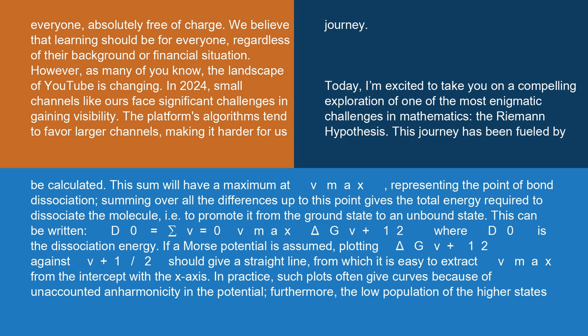This sum will have a maximum at v_max, representing the point of bond dissociation. Summing over all the differences up to this point gives the total energy required to dissociate the molecule, i.e., to promote it from the ground state to an unbound state.